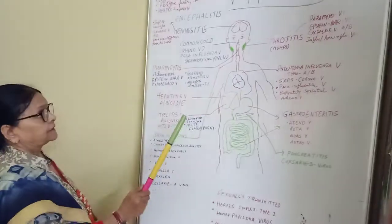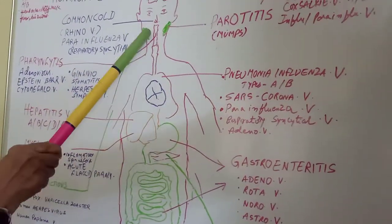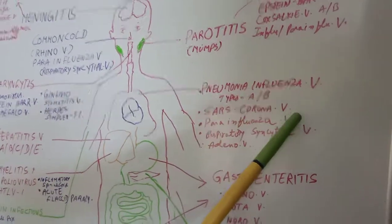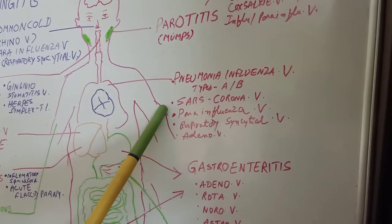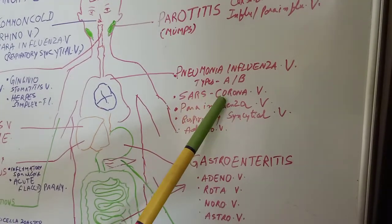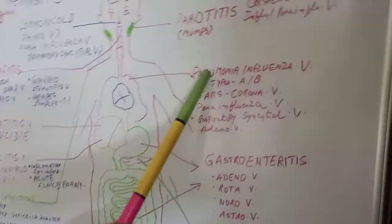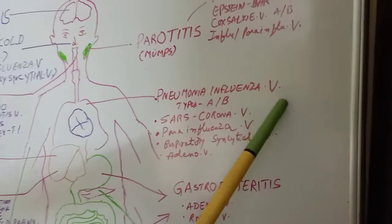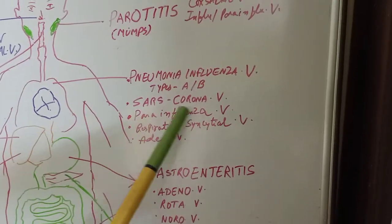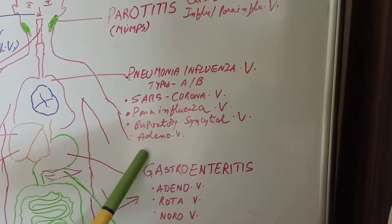Coming lower to the lungs, the upper respiratory system is affected by SARS coronavirus — presently known as COVID-19, or Severe Acute Respiratory Syndrome coronavirus. Another lung disease is pneumonia, caused by parainfluenza virus types A and B, respiratory syncytial virus, and adenovirus.